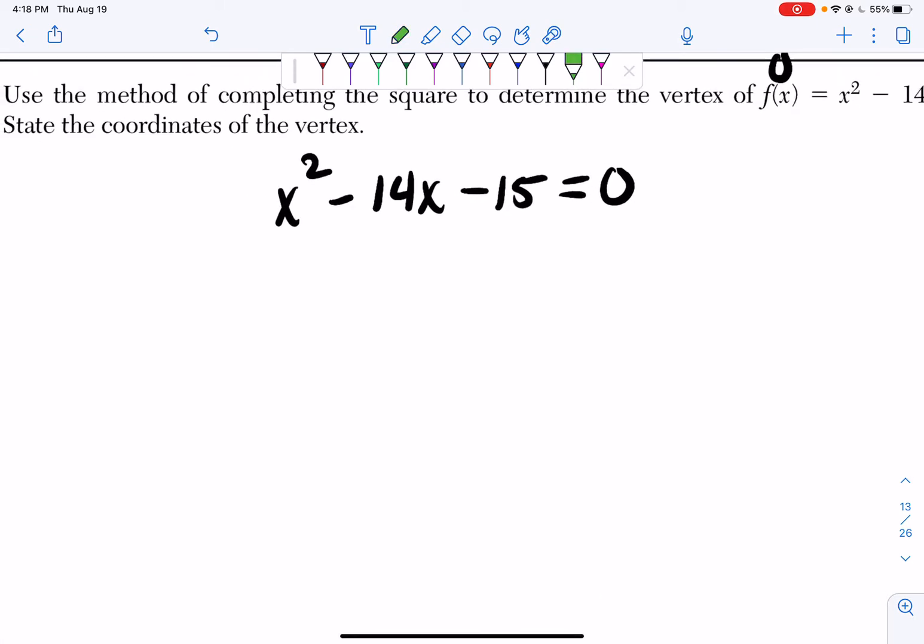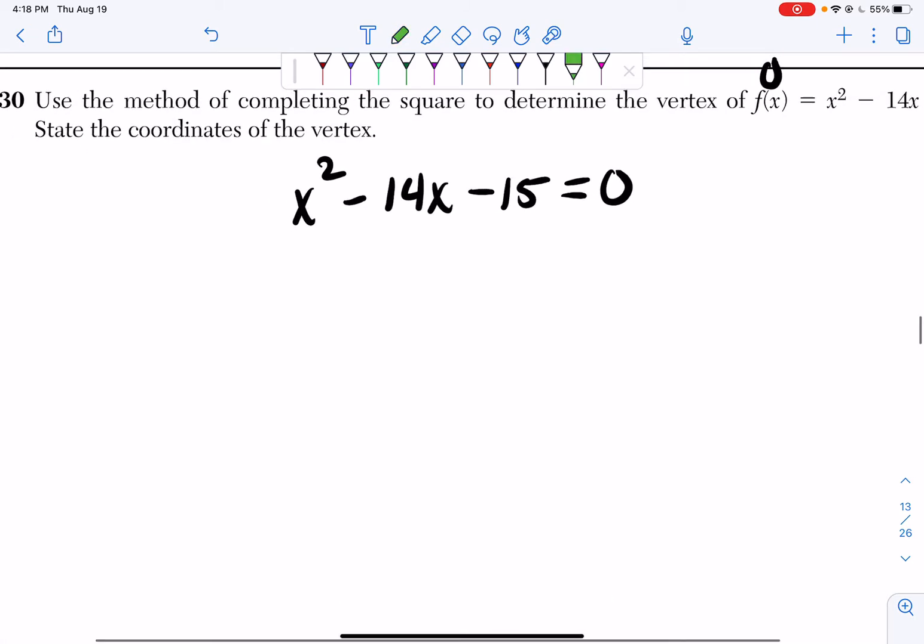So I'm going to have to figure out how do we get rid of this minus 15? I'm going to add 15 to both sides of my equation. So I have x squared minus 14x equals 15.